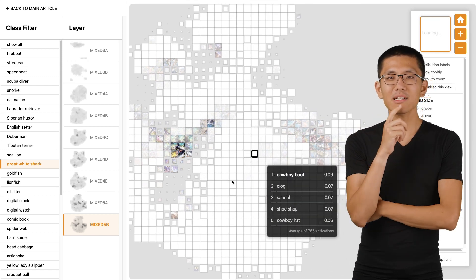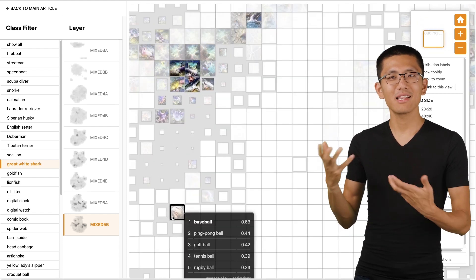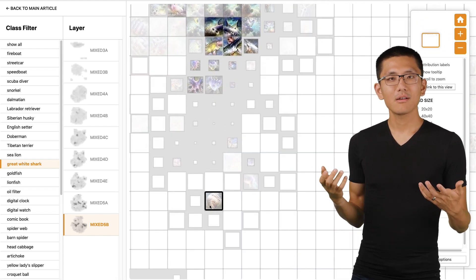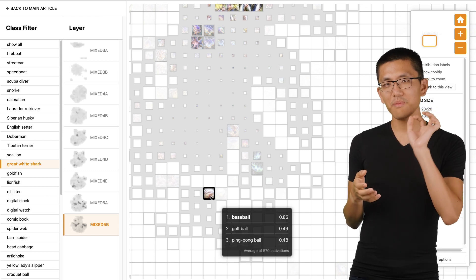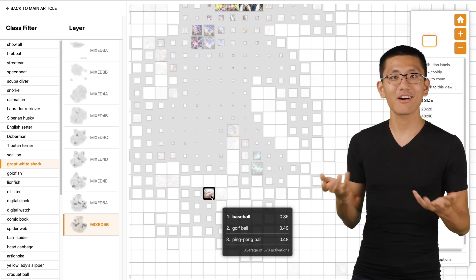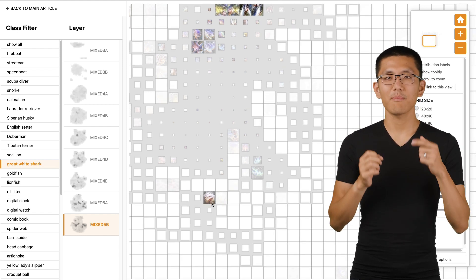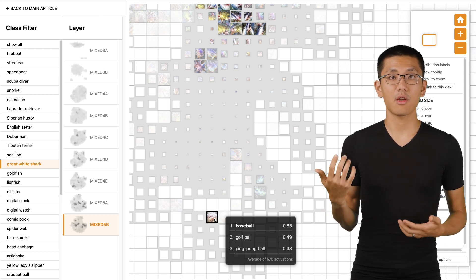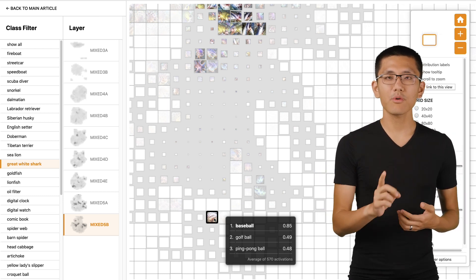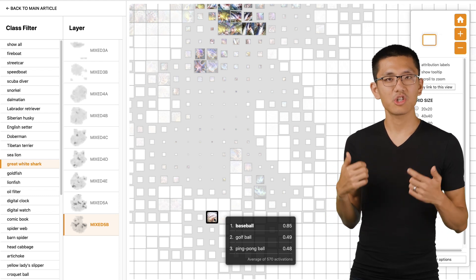What is a baseball doing so late in the network structure? So if the network thinks that baseballs have a pretty strong relationship to great white sharks, what would happen then? Perhaps if we added an image of a baseball, just slapped it on top of this image of a gray whale, could we fool our neural network into thinking that it's seeing a great white shark?